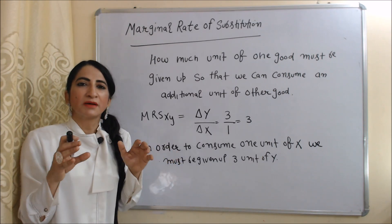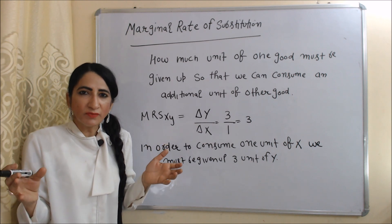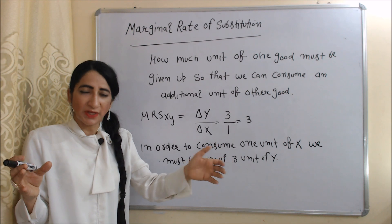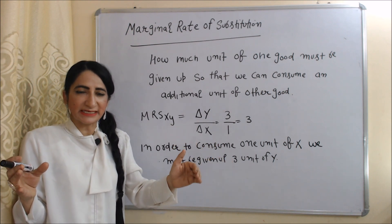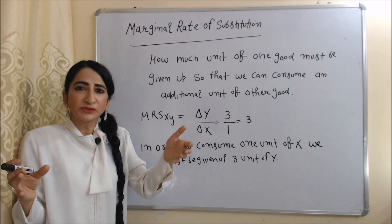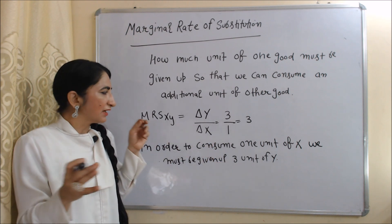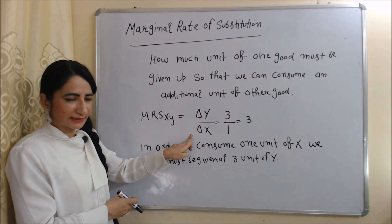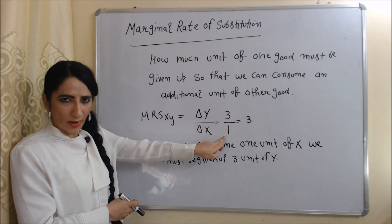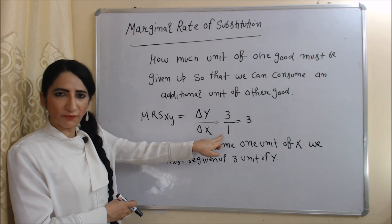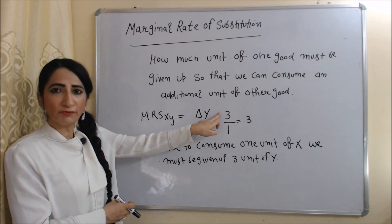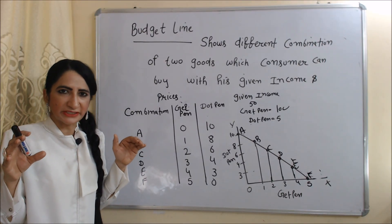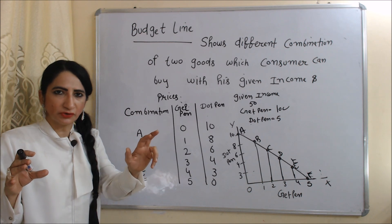Now we are going to talk about marginal rate of substitution. Marginal rate of substitution tells us how much of one good must be given up so that we can consume one additional unit of the other good. The formula for marginal rate of substitution of X for Y is delta Y over delta X. Here delta Y is 3 and delta X is 1, meaning to consume one unit of X we must give up 3 units of Y, so the marginal rate of substitution of X for Y equals 3.